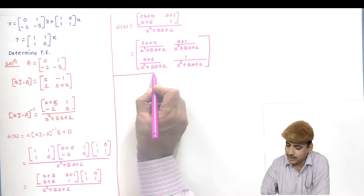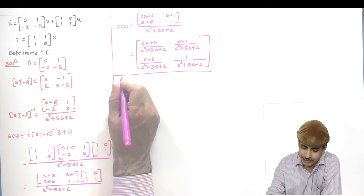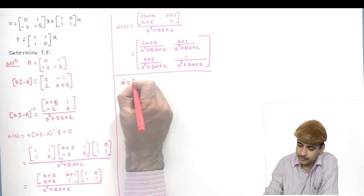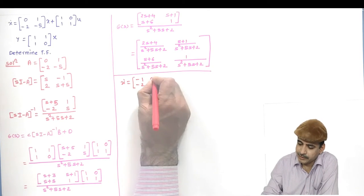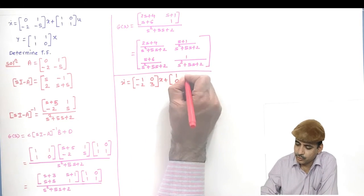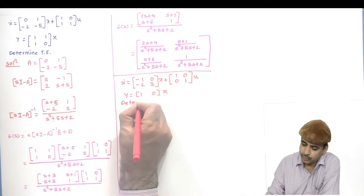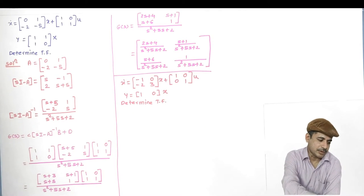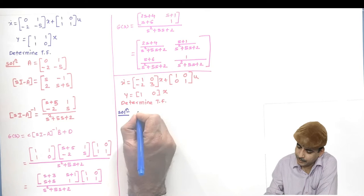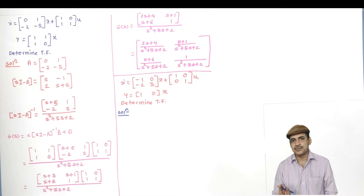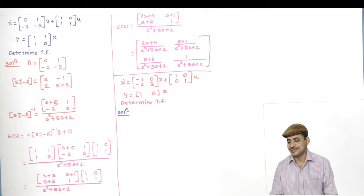We will take one more interesting example. Let x-dot = [[−1,0],[−2,3]]·x + [[1,0],[0,1]]·U, and Y = [1, 0]·x. Determine the transfer function. Here A is 2×2 (second-order system), B is 2×2 (two inputs), and C is 1×2 (one output). So one output is obtained by the contribution of two inputs.